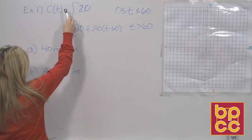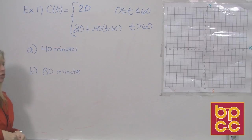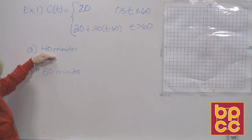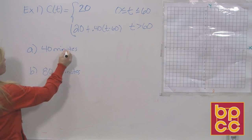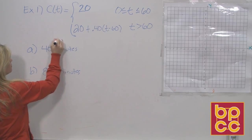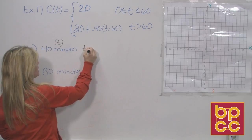Now, we can use this function, this piecewise function, to find answers. If I want to know how much it's going to cost me to talk 40 minutes, well, 40 minutes is representing t. So I know here t is 40.